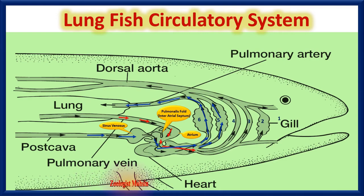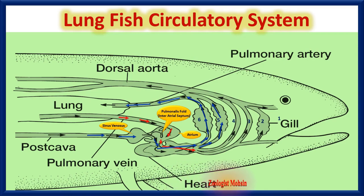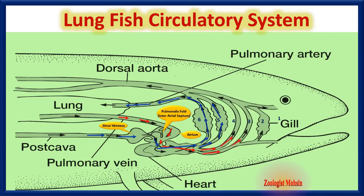In some fishes, both gills and lungs may work together at the same time. From the lungs, the oxygenated blood enters the atrium — this is one circuit. The oxygenated blood from the conus arteriosus is supplied to the two middle arches, which do not have any gills, and blood passes directly to the dorsal aorta for supply.